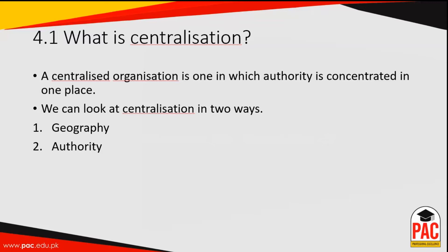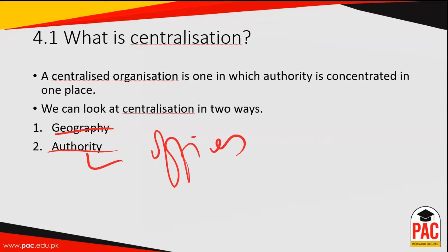In a centralized organization, authority is concentrated at one place. Centralization can be in two ways: geographical or authoritative. Geographically centralized means the organization is located at one place, and authoritatively centralized means all decision making is taken at one position, wherever the organization's offices are located or dispersed.